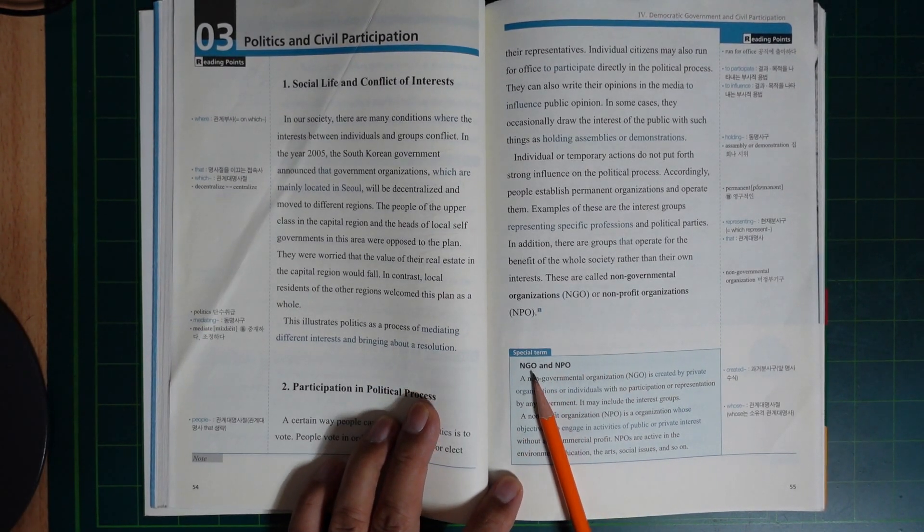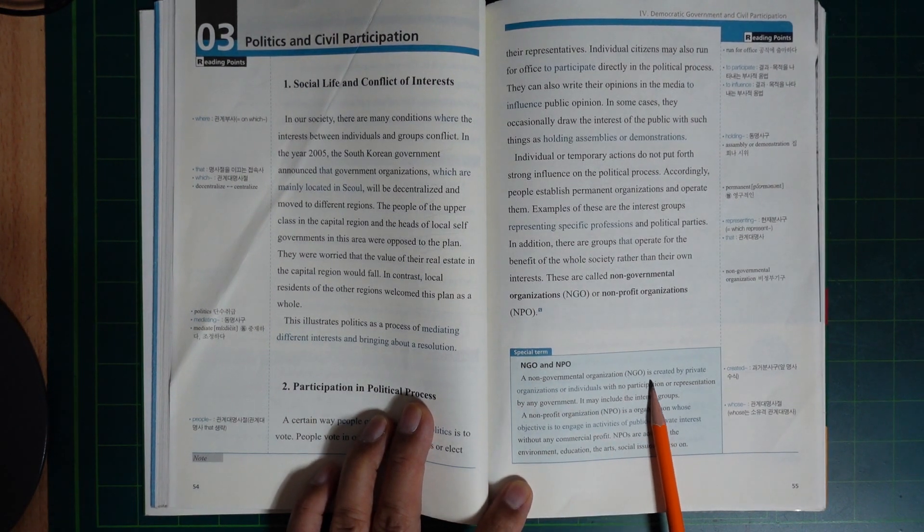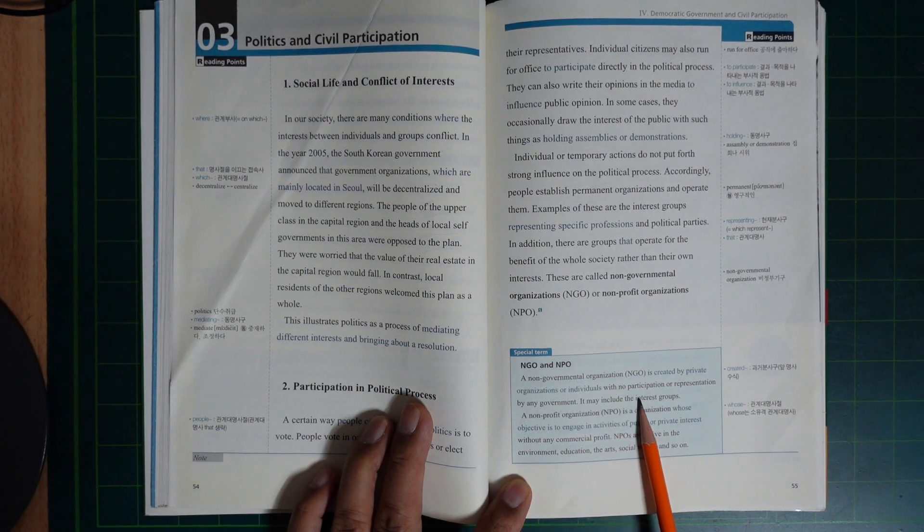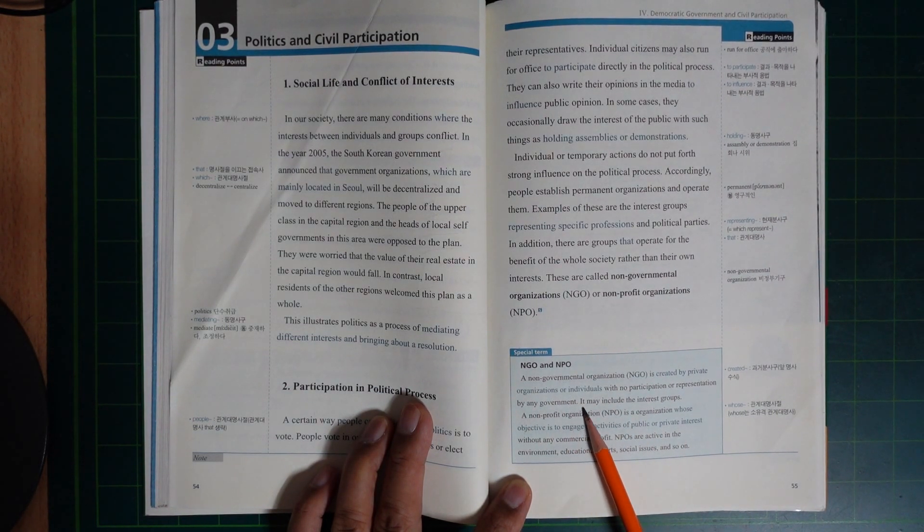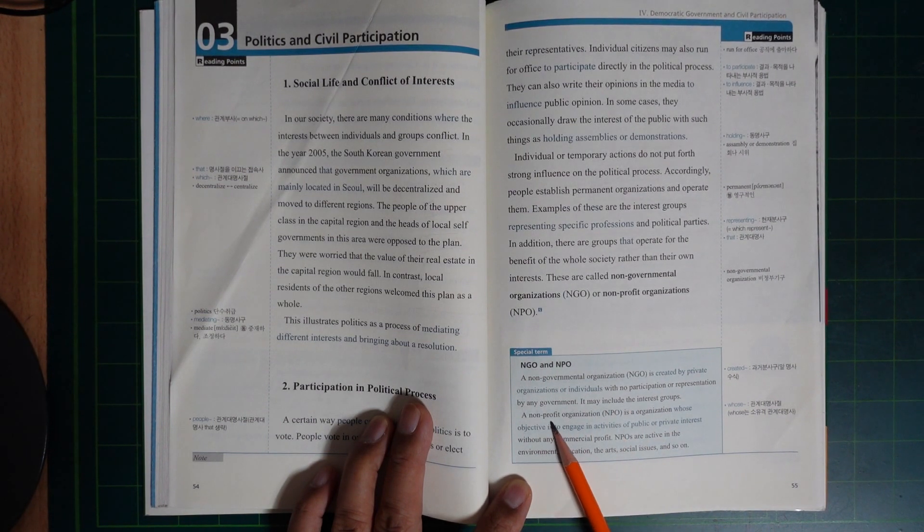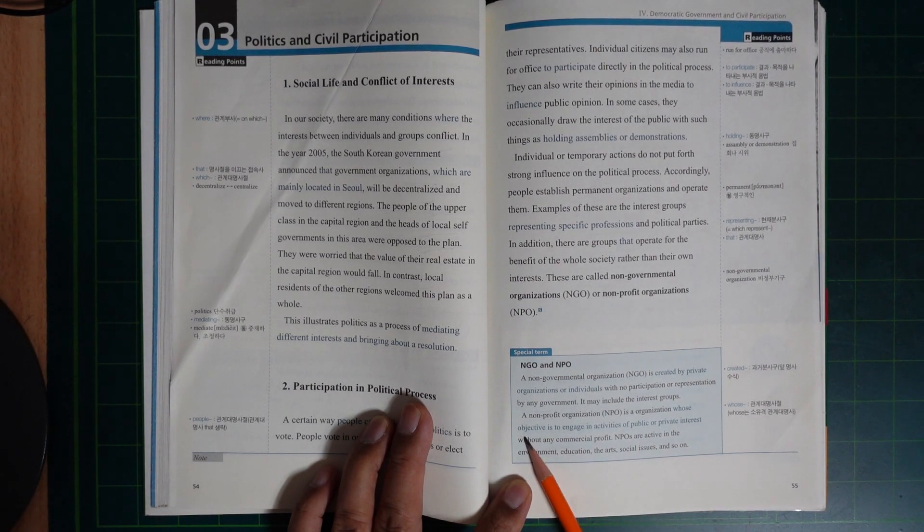Special terms: NGO and NPO. A non-governmental organization (NGO) is created by private organizations or individuals with no participation or representation by any government. It may include interest groups.